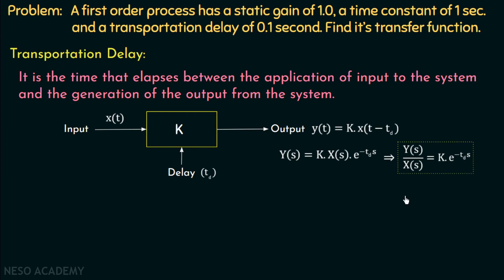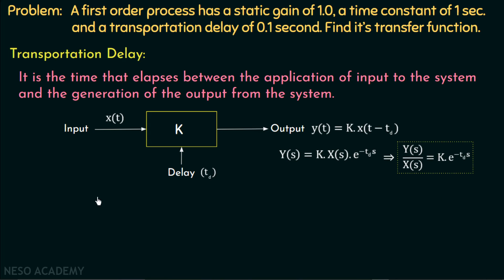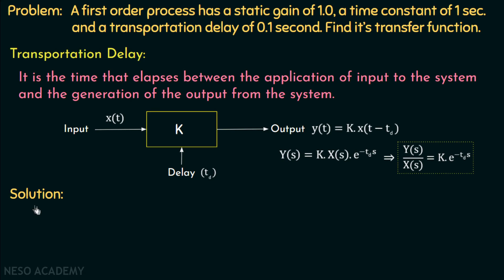From now onwards, we can note that if an exponential term is present in the transfer function of a system, then it represents the transportation delay. With that, we are done with the discussion on transportation delay and will now move on to the solution of our problem.